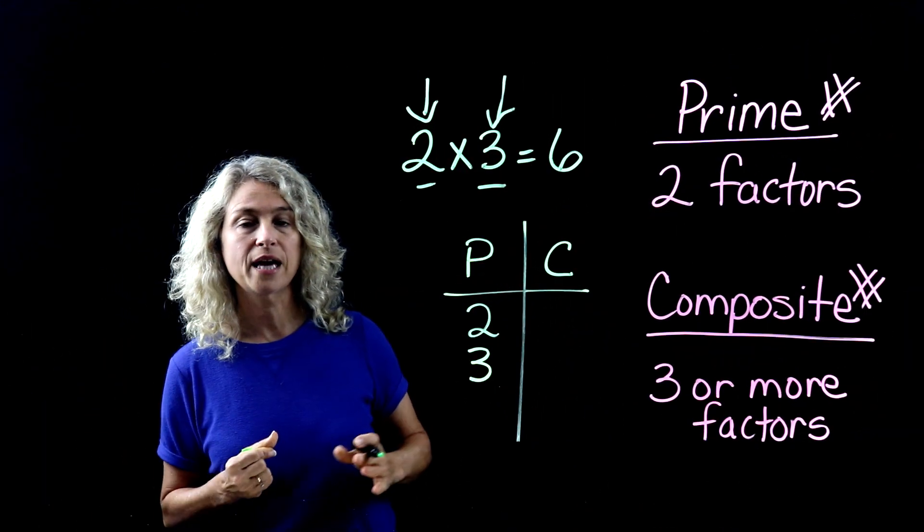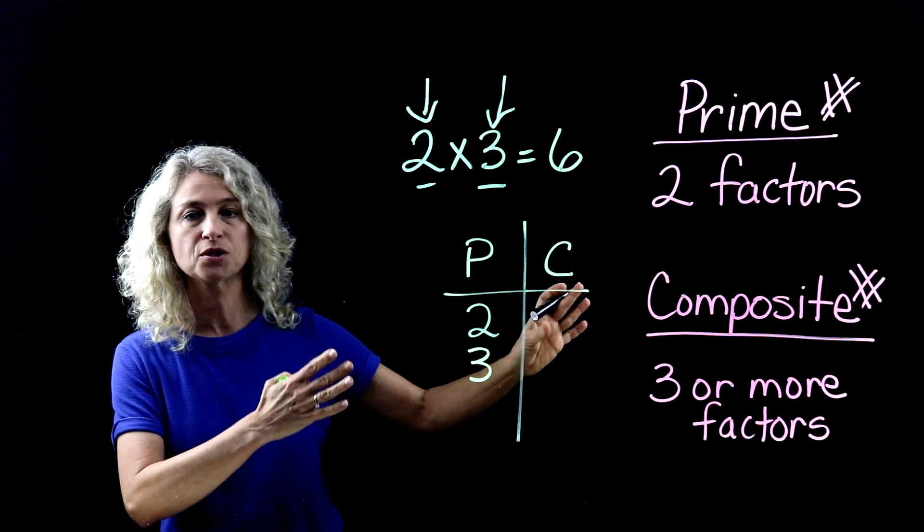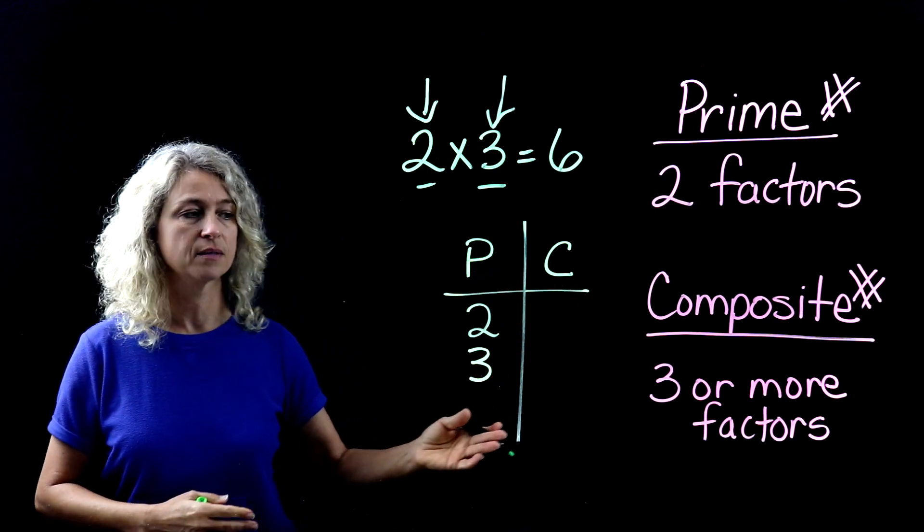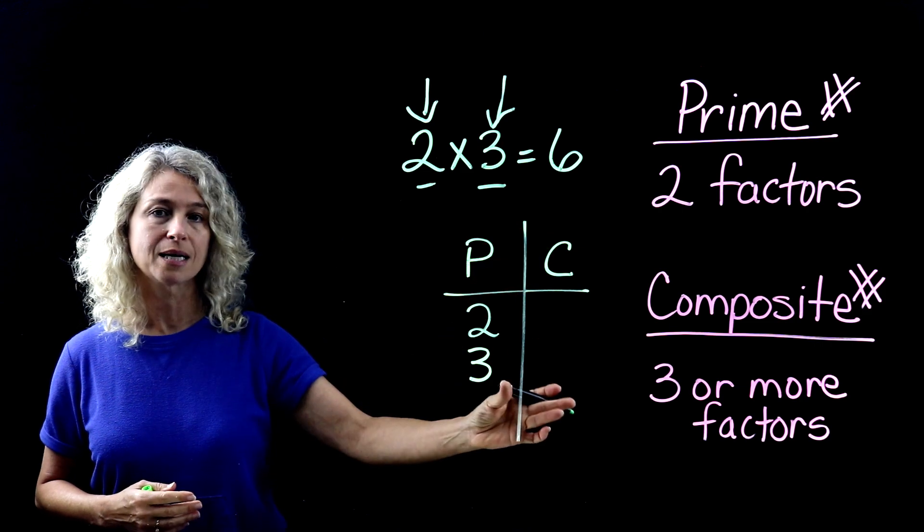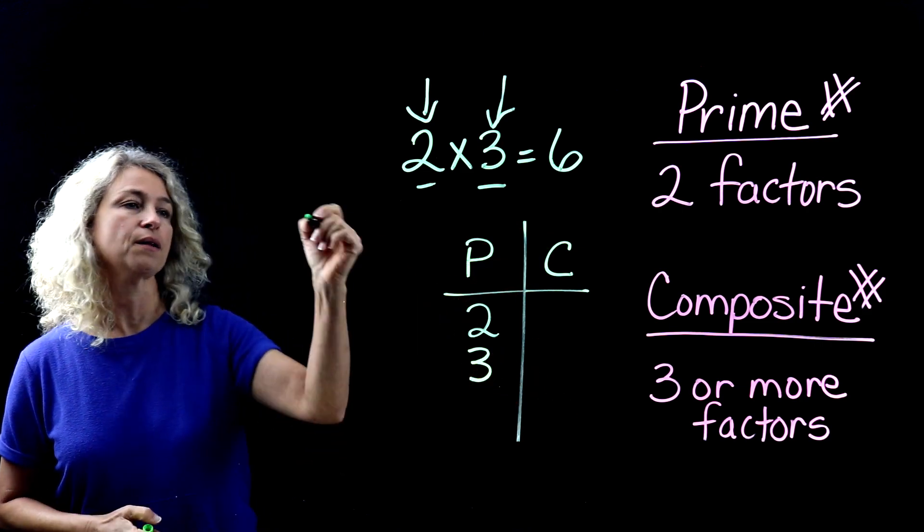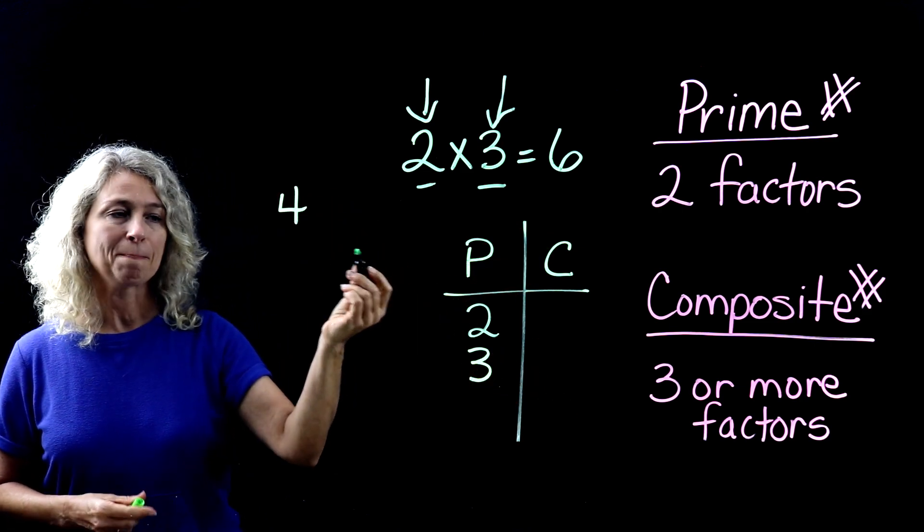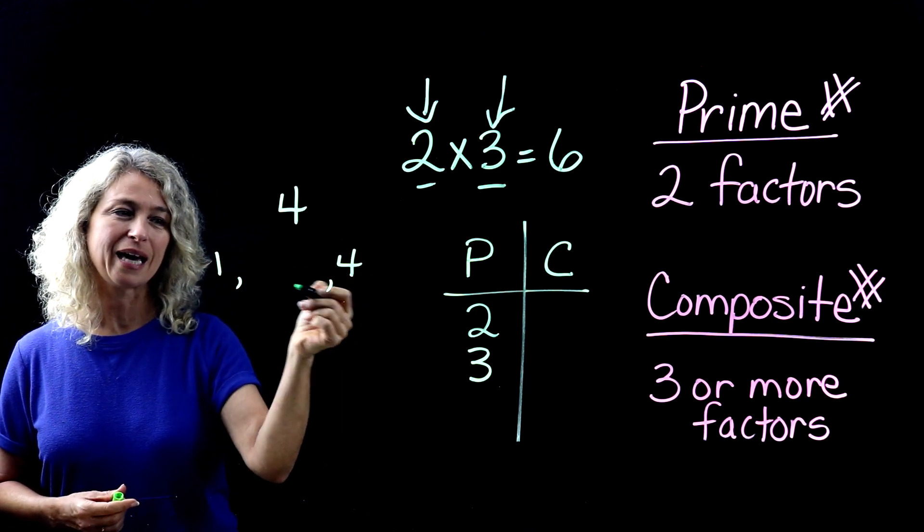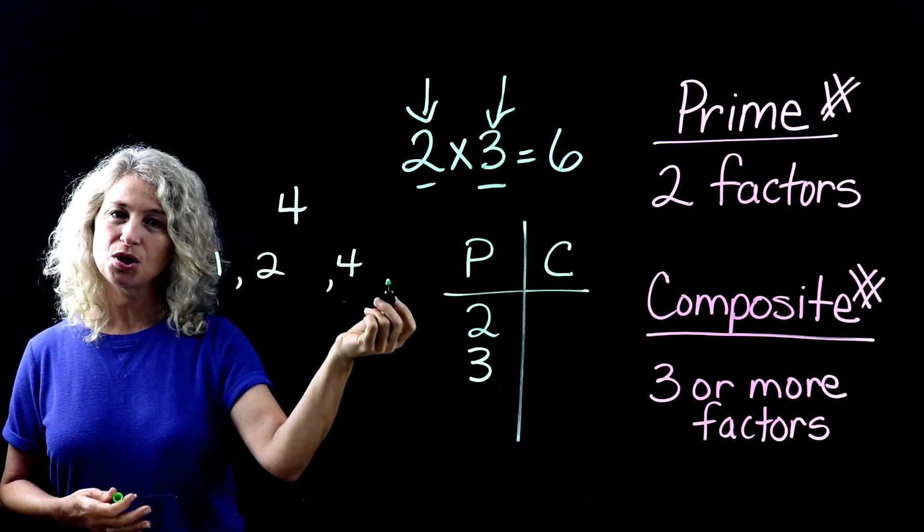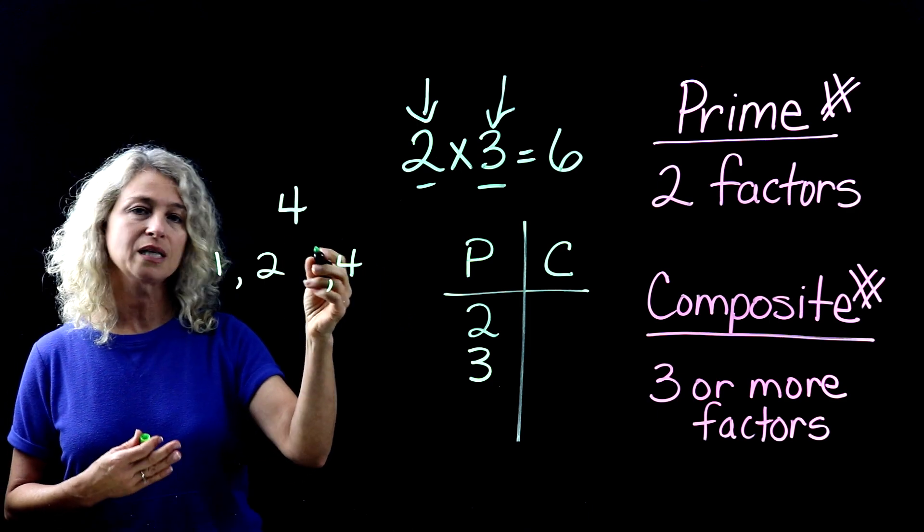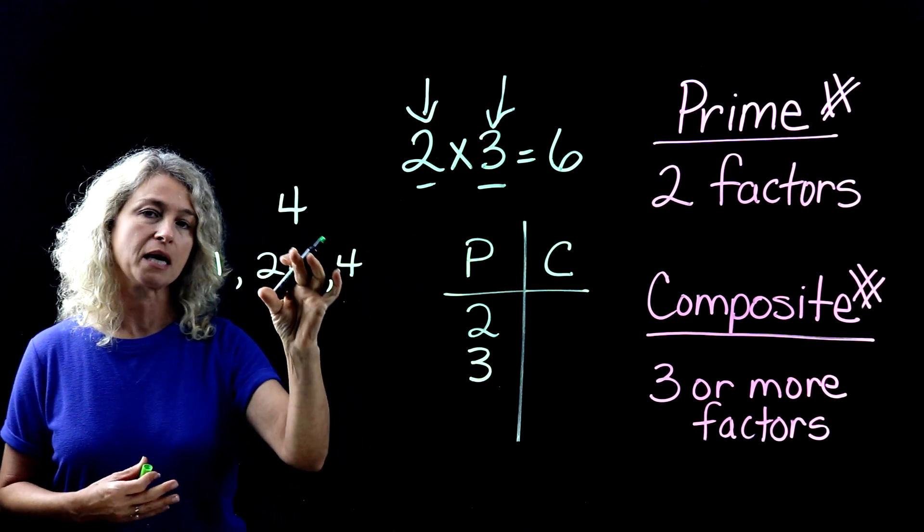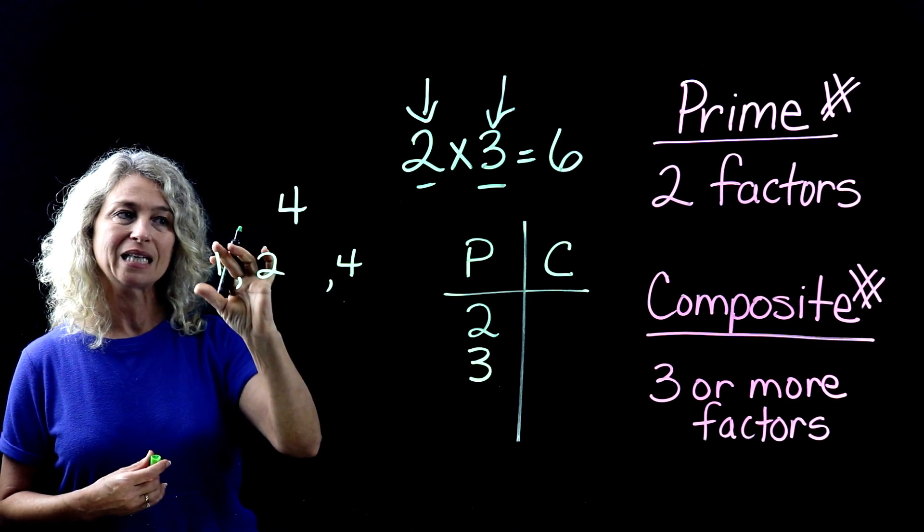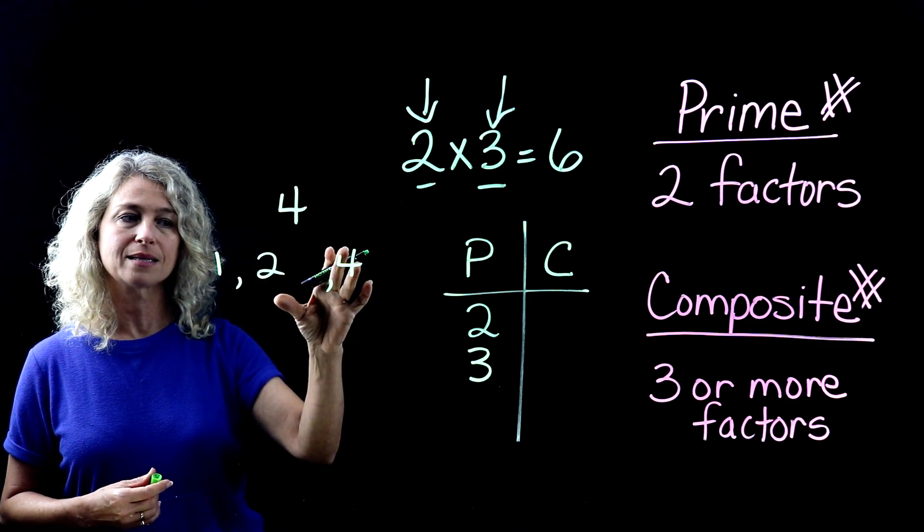So if we're going down just the first few numbers, one to ten, and we want to list whether they're prime or composite, let's look at four quickly. Number four. One times four. But you also can say two times two.